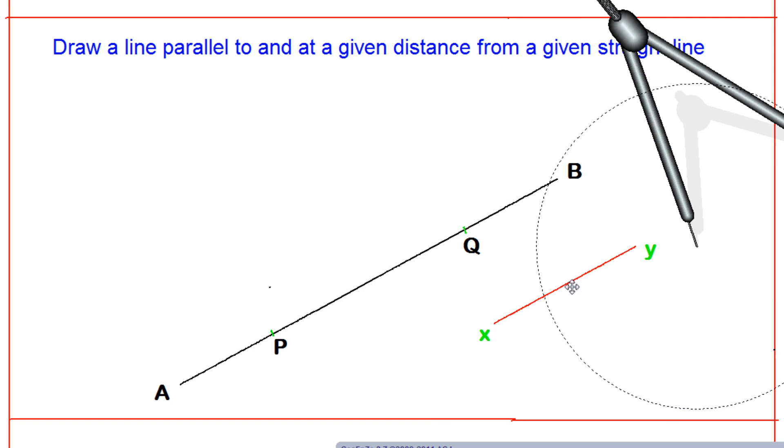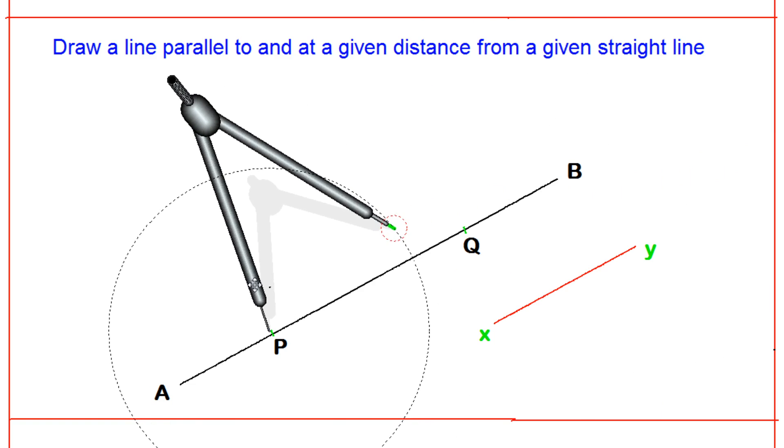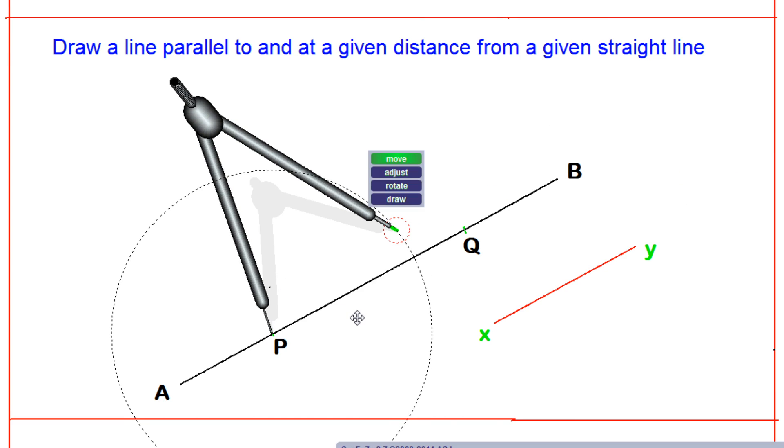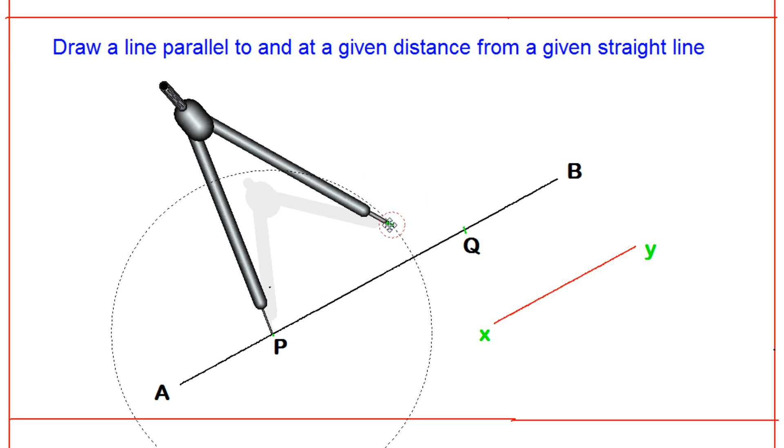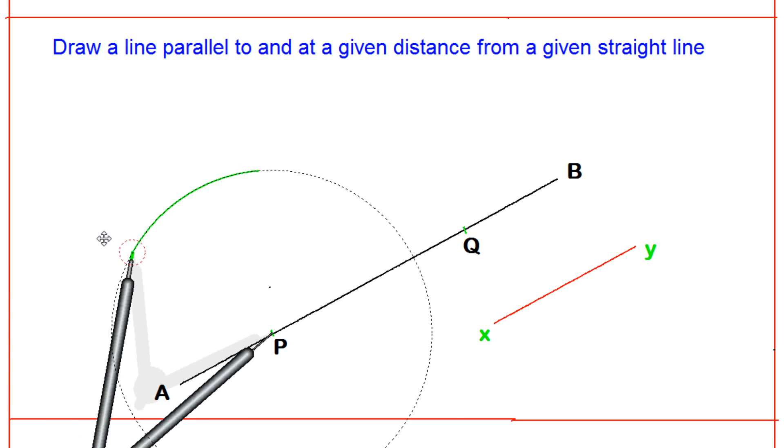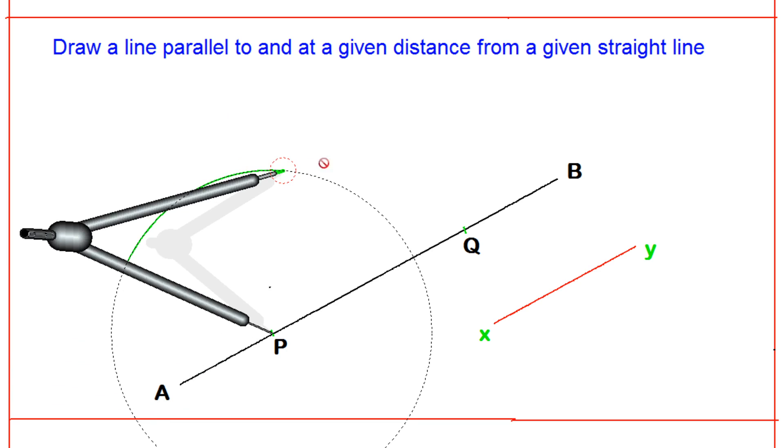Now with the same distance XY, make P and Q as the centers and draw two arcs on the same side of the line. So I have taken P as the center and I will draw an arc on the same side, on the top side of PQ. I am using the green line here, so this is one arc I have drawn.